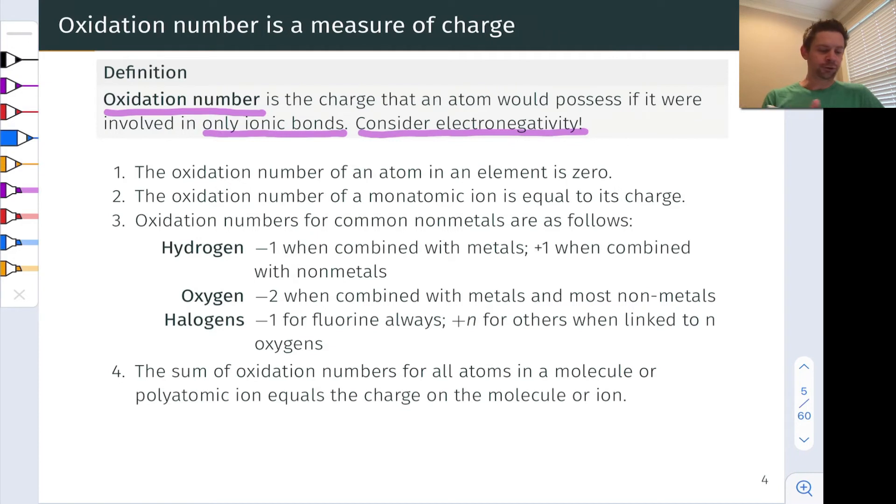Rule number one is also very straightforward. The oxidation number of an atom in its elemental form is zero, and this includes any monatomic metallic element and the diatomic elements like Br2, Cl2, I2, H2. Those atoms are all in the zero oxidation states, since electrons, if they're involved in a bond, are shared equally, right? Those covalent bonds in H2 and Cl2, for example, are non-polar covalent bonds.